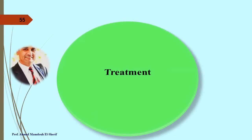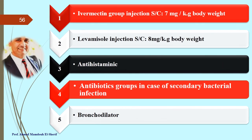Treatment of verminous bronchitis: (1) Ivermectin group injection subcutaneously at 7 mg/kg body weight; (2) Levamisole injection subcutaneously at 8 mg/kg body weight — caution: high doses cause nervous manifestations; (3) antihistaminic drugs; (4) antibiotics in case of secondary bacterial infection; (5) bronchodilators.